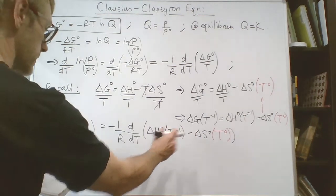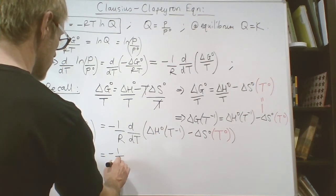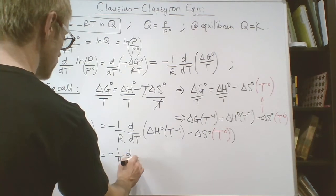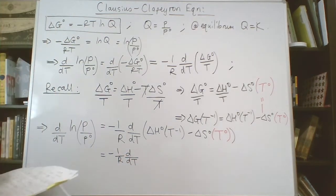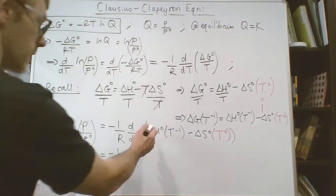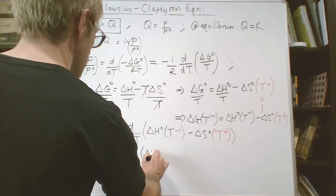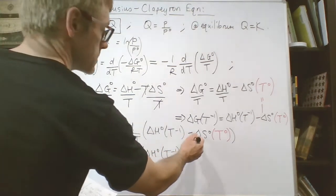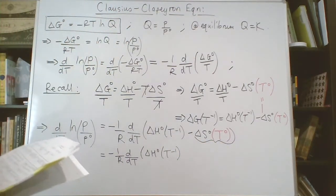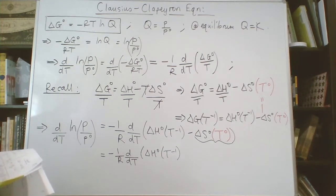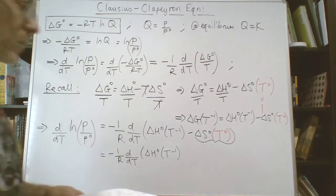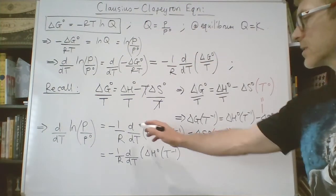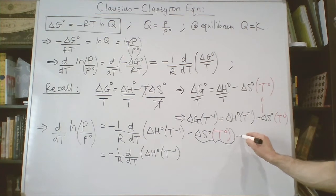We can condense this down. We've just got -1/R times d/dT. We've got this first term, ΔH° times T^-1, this whole term over here. This whole term here would disappear.